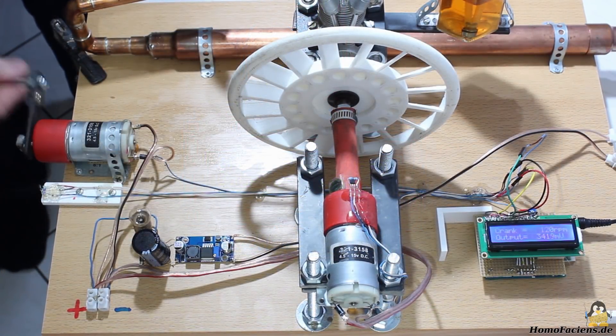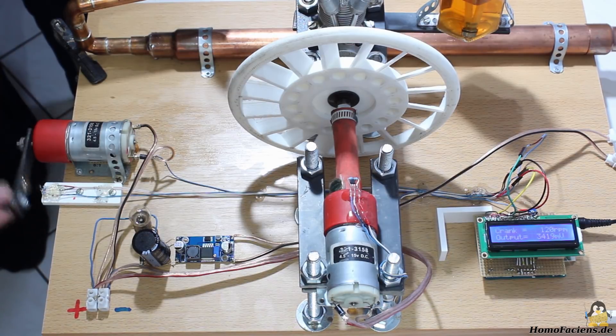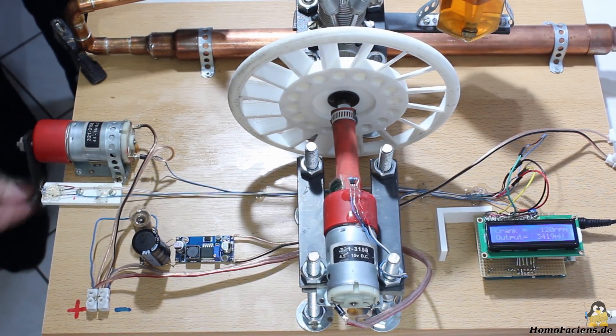Secondly, a speed of no more than 120 revolutions per minute with low torque on the crank is enough to keep the microcontroller powered.